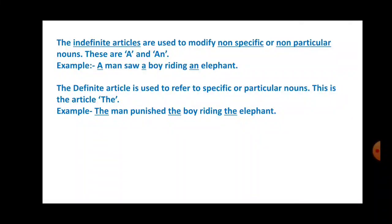elephant, we are talking about them for the first time, we are introducing them. So we will use a and an. So a and an are used for non-specific nouns or non-particular, for introducing nouns like a man saw a boy riding an elephant.